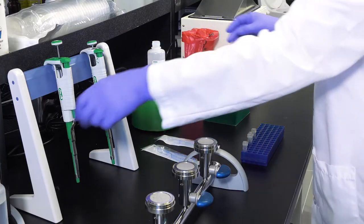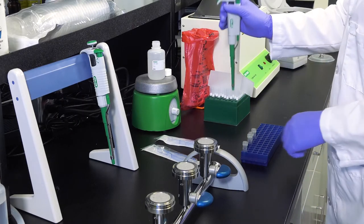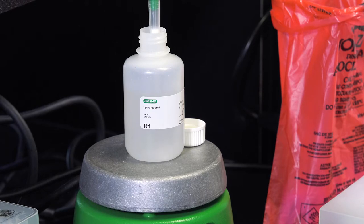First, pipette one milliliter of R1 solution into a two milliliter screw cap microcentrifuge tube. The R1 reagent must be continuously stirring on a magnetic stir plate.